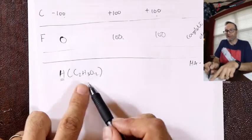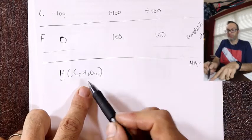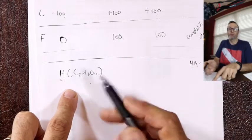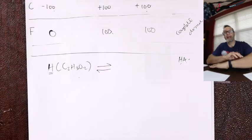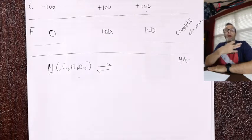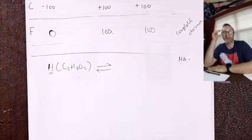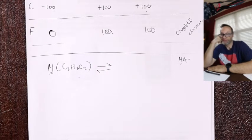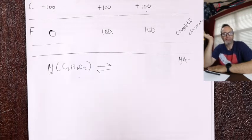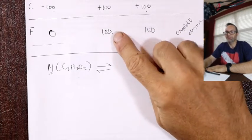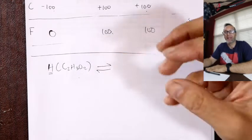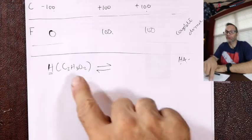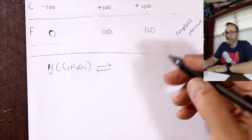When I dissolve vinegar in water, I write a double-headed arrow, meaning it only partially dissociates. If you check a bottle of vinegar, it might say '10% acidity' — not 100% like HCl would be. That means one in ten molecules breaks apart. That's partial dissociation.